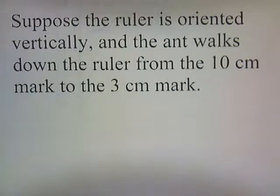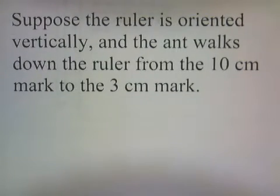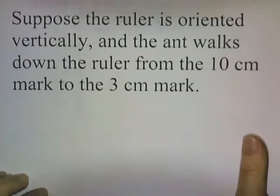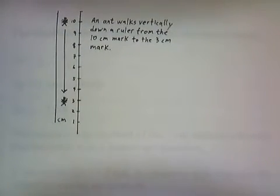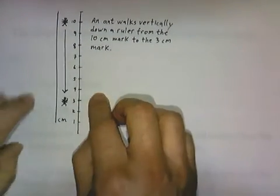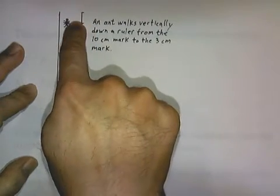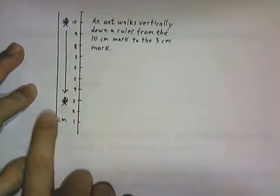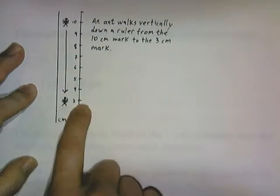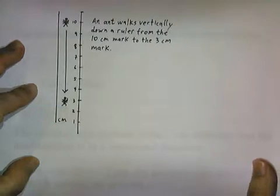Now suppose our ruler is oriented vertically and the ant walks down the ruler from the 10cm mark to the 3cm mark. Here's a picture of that: we've got our ant at the 10cm mark on the ruler, walking straight downward until it reaches the 3cm mark.